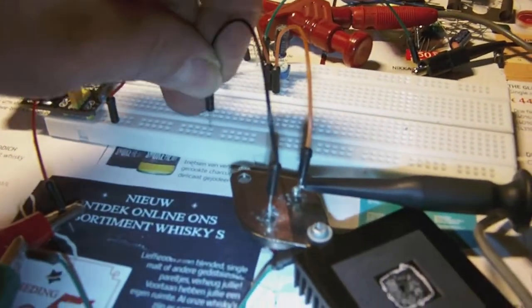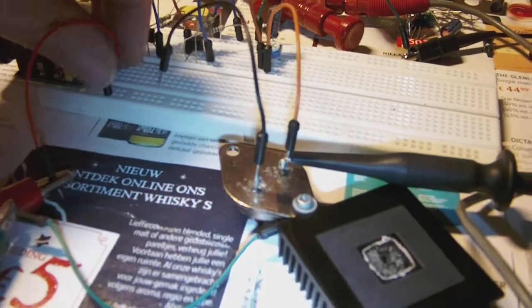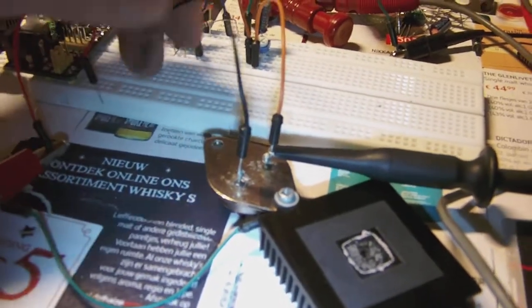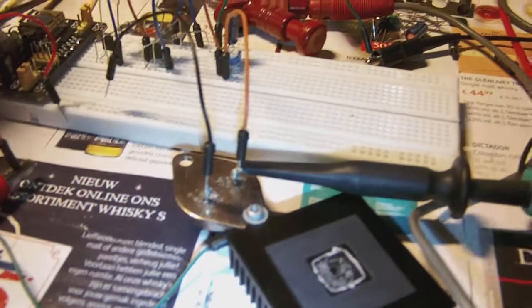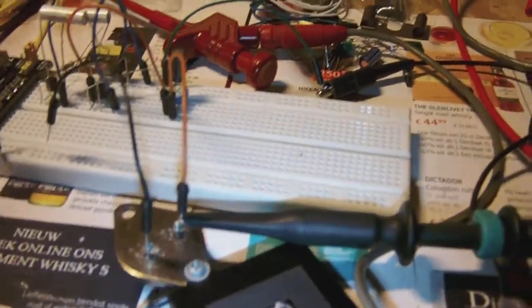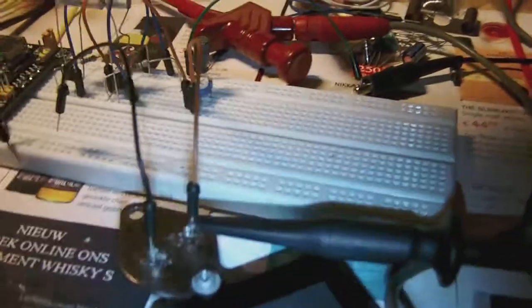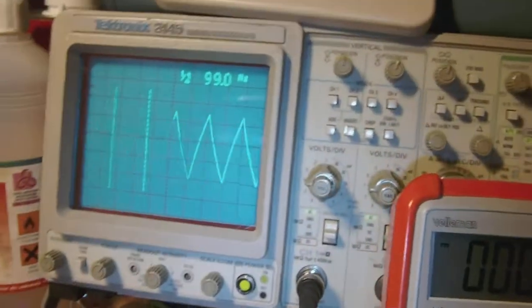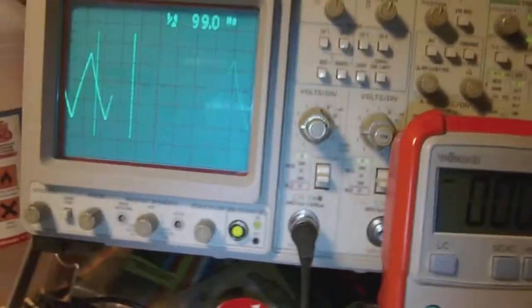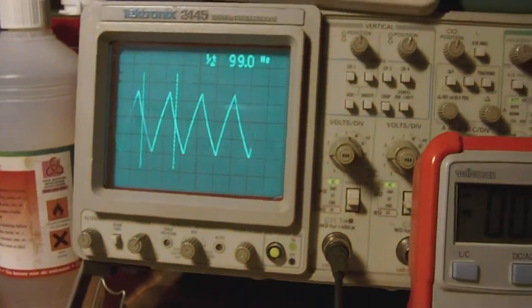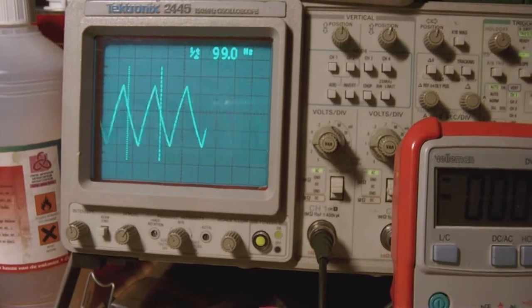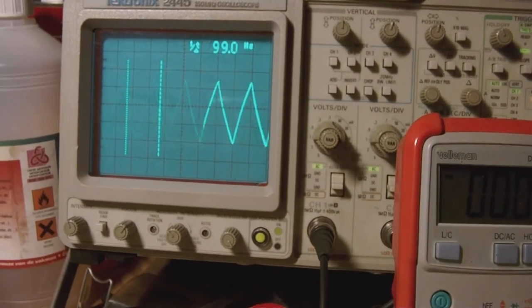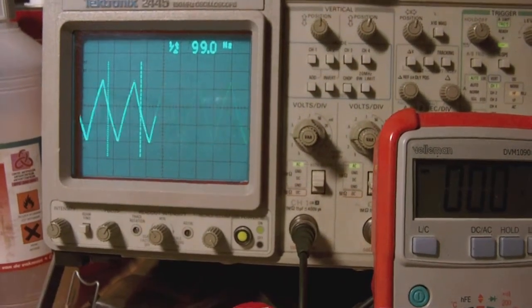Now interestingly enough, if I switch off or I take out the power transistor from the circuit and I then start the oscillator, this is the output I get at the low pass filter. Peak to peak it's about three and a half volts.